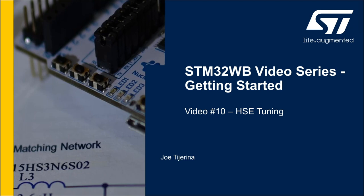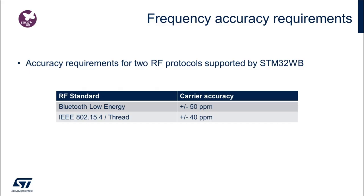Welcome to the HSE tuning video of the STM32WB Getting Started series. I'm Joe Chiarina and I'll be showing you how to tune the HSE oscillator frequency for RF applications such as Bluetooth LE, since the HSE accuracy is essential for RF performance. The accuracy requirement is 50 ppm for Bluetooth LE and 40 ppm for IEEE 802.15.4, and in this video I'll be focusing on Bluetooth LE.